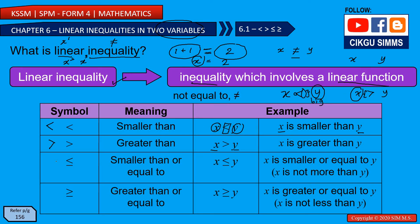The third symbol has a line below the 'smaller than' sign, which means 'equal to' as well. So it means 'smaller than or equal to.' In this case, x is smaller than or equal to y — in other words, x is not more than y. Similarly, 'greater than or equal to' means x is not less than y.